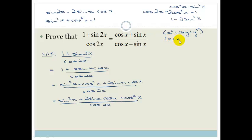And what does this become? This becomes x plus y all squared. So therefore, this is going to become sin x plus cos x all squared.